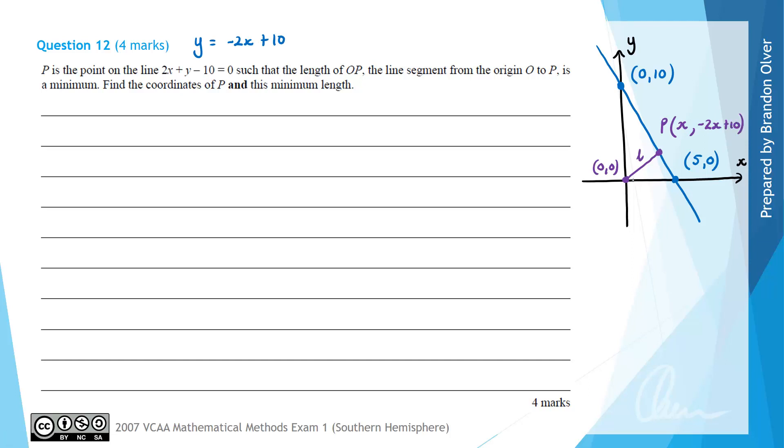So to find the length of that line L, we could create a right-angled triangle, which would have a length of x and a height of y. So therefore, we would have L squared equals x squared plus y squared, but y is minus 2x plus 10 all squared.